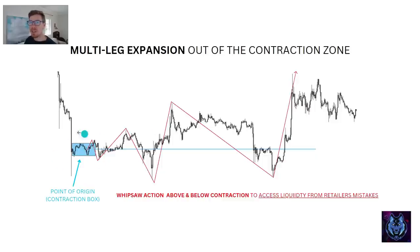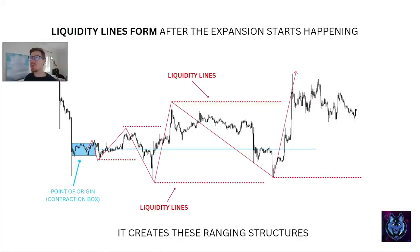We get the point of origin and we get these expansion points — high, low, high, low, high, low. It's this whipsaw action above and below the contraction, created to access liquidity from the retailer's mistakes. It is designed to trick the retailer to make the wrong decision so that institutions can fill their massive orders. Liquidity lines form after the expansion starts happening.